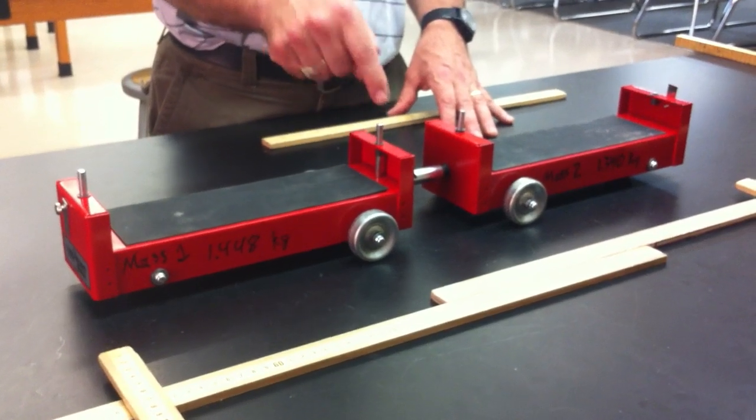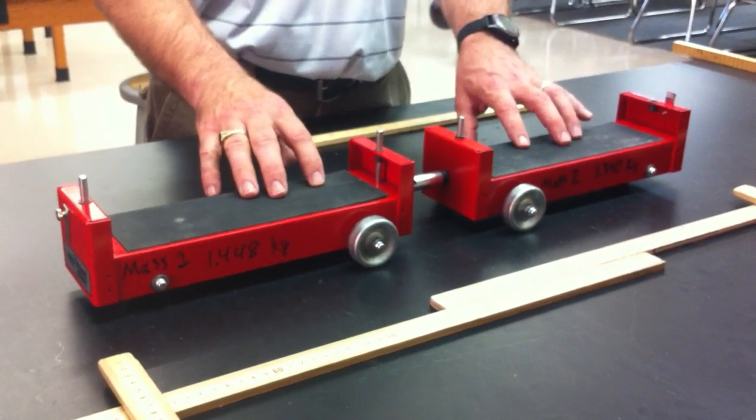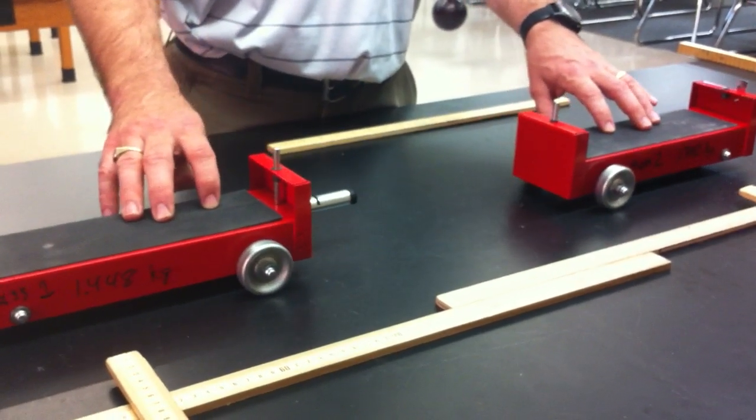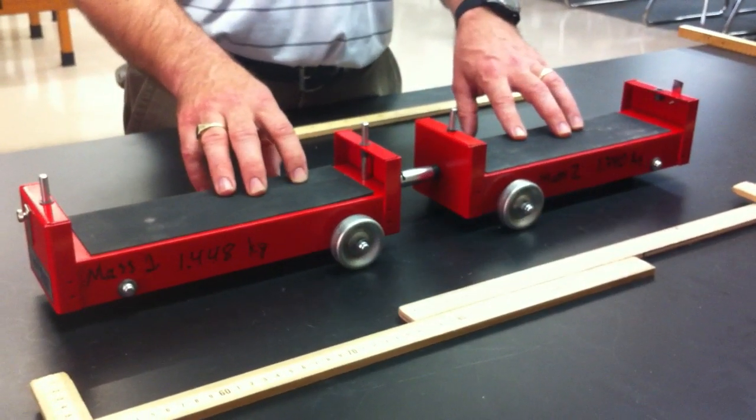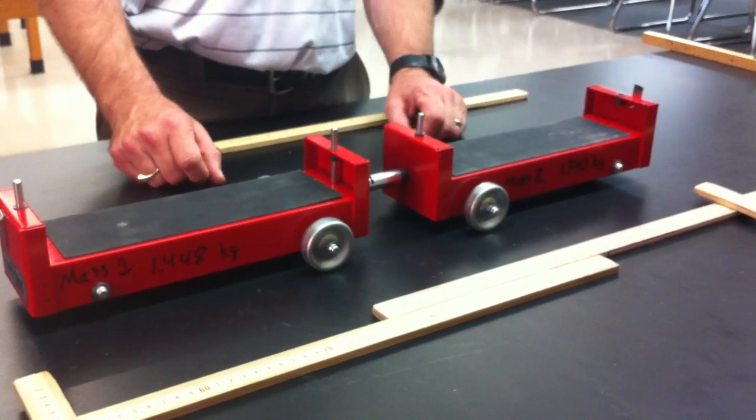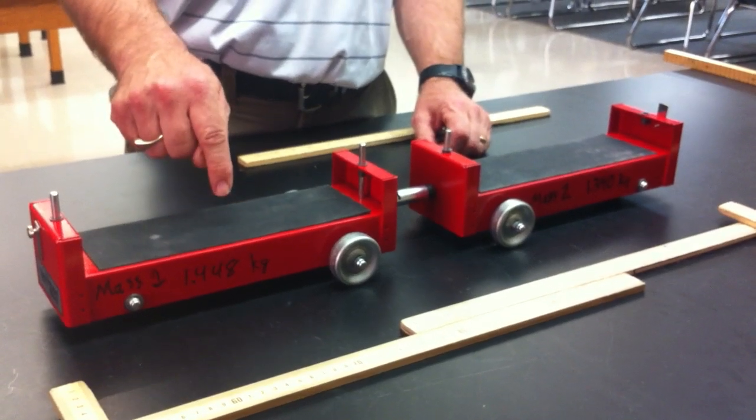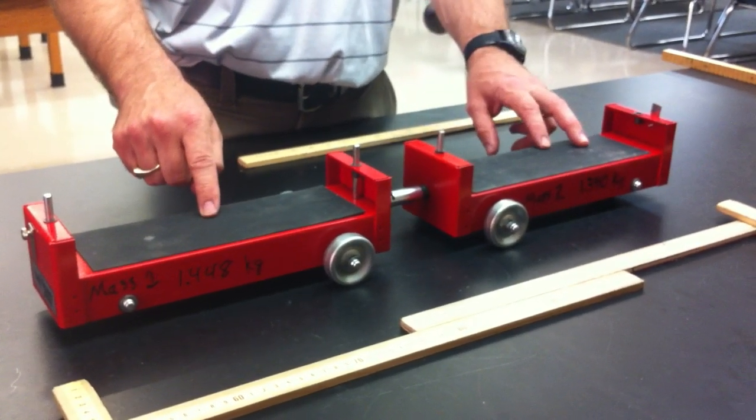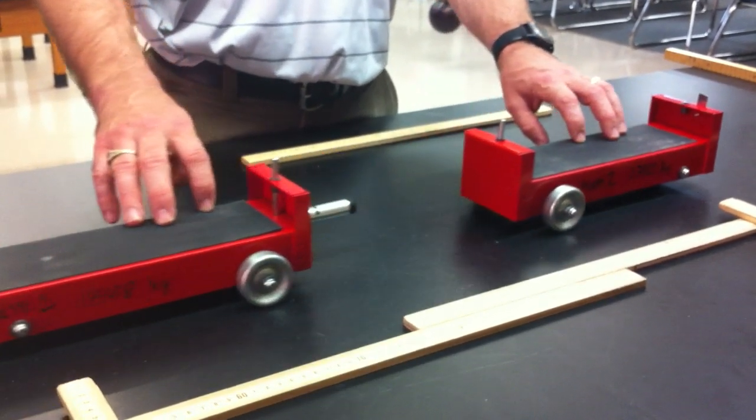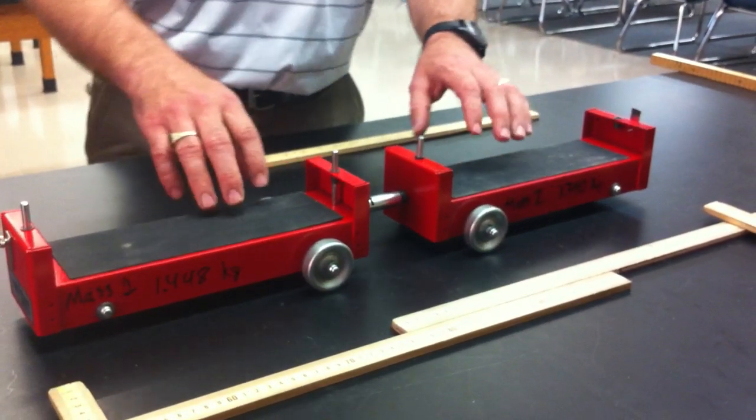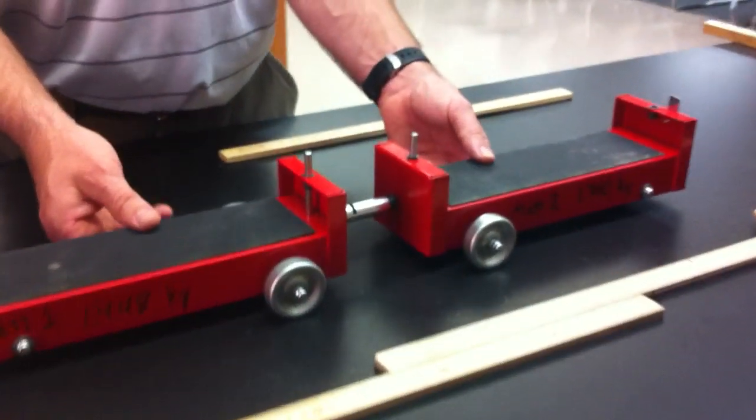Once the pin fires the spring they'll move out like this in opposite directions. And what you're going to see is that the momentum of this cart is going to be equal and opposite to the momentum of this cart so that the system's momentum when they're traveling is still equal to zero. Kind of give you a little heads up on what should happen.